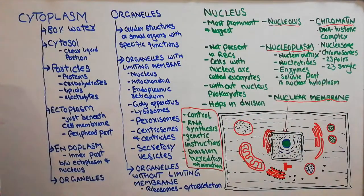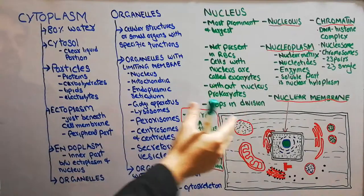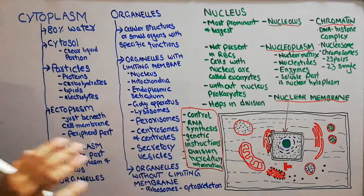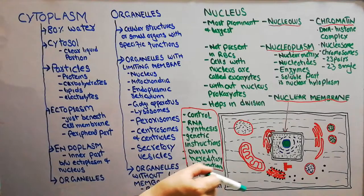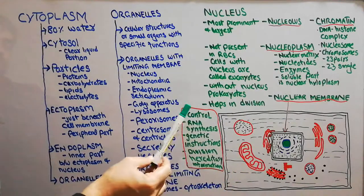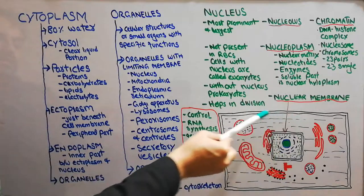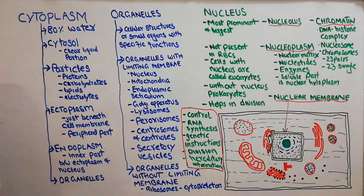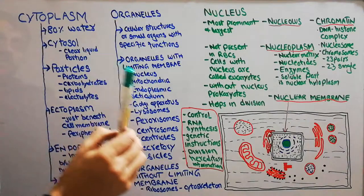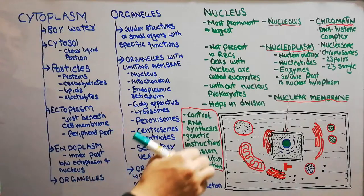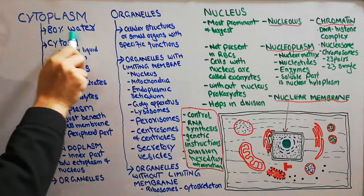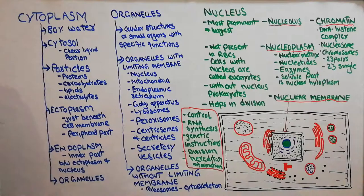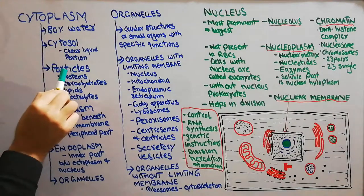The plasma membrane is made of a lipid bilayer — two layers of lipids with interspersed proteins and glycoproteins that help the cell in different ways. Inside the plasma membrane, there is a clear fluid which is known as cytoplasm. This cytoplasm is made of about 80 percent water. It is made of different substances, but 80 percent of it is water.